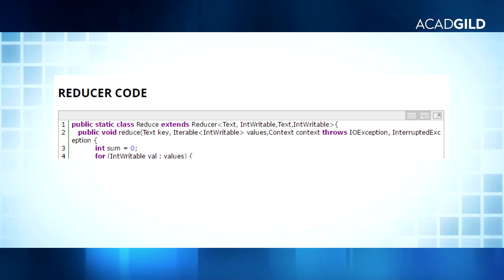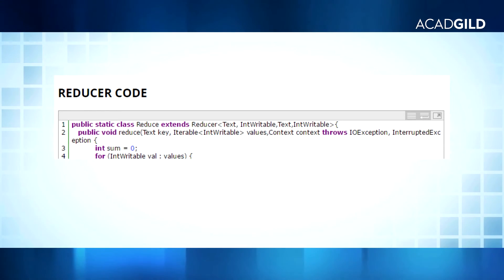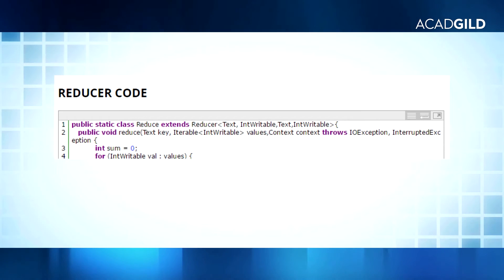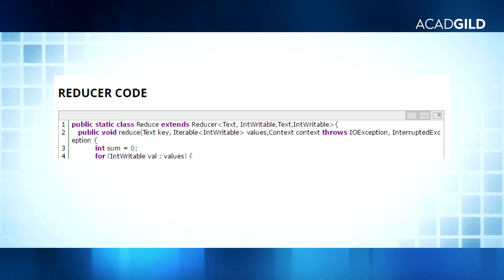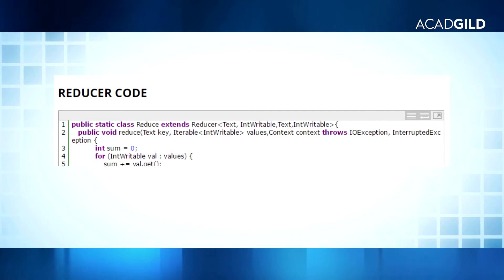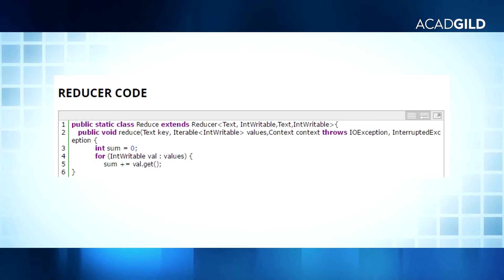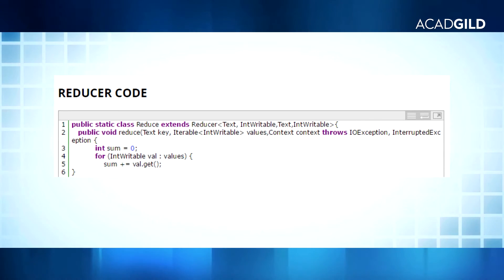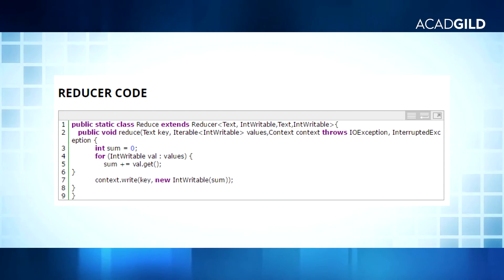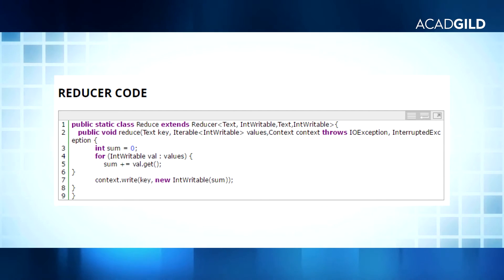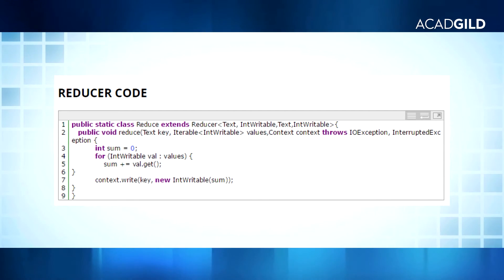In line 4, a for-each loop is taken which will run each time for the values inside the iterable values that come from the shuffle and sort phase after the mapper phase. In line 5, we are storing and calculating the sum of these values. Line 7 will write the respective key and the obtained sum as value to the context.